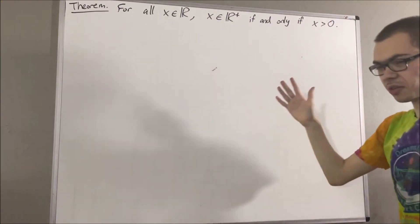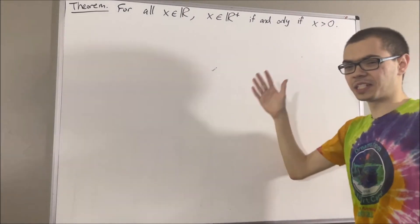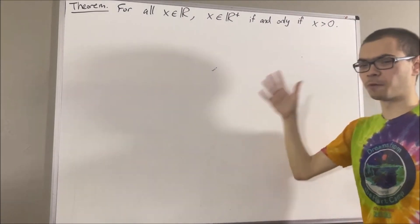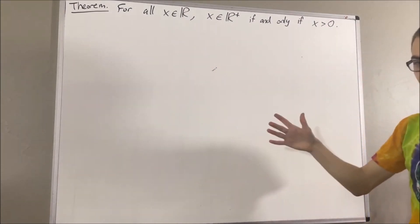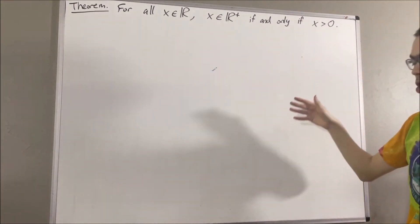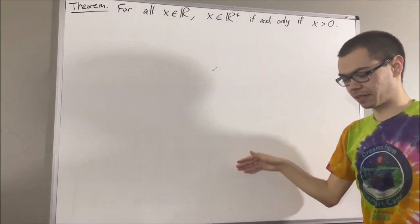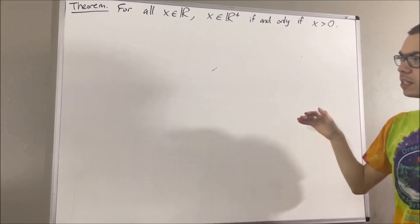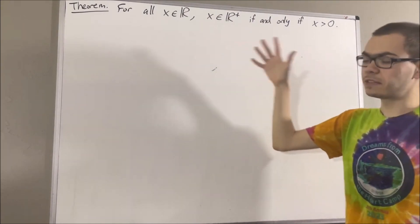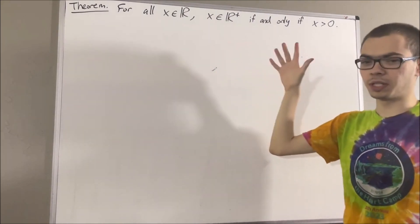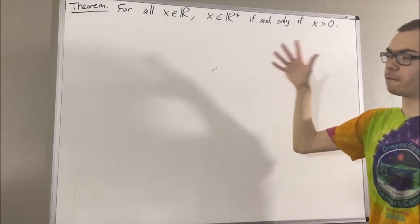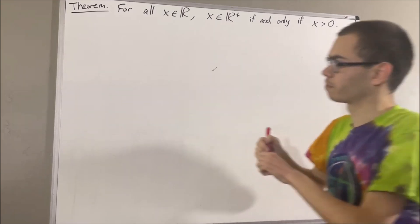Now, in this series, we are using a list of 10 axioms for the real number system, and I'll leave that list of axioms in the description below. In this video, we are going to be using the following axiom.